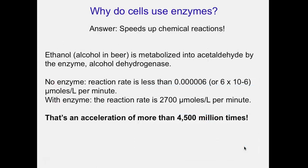Why do cells use enzymes? To speed up chemical reactions. For example, ethanol — the alcohol in beer and wine — is metabolized into acetaldehyde by an enzyme called alcohol dehydrogenase. Without that enzyme, the reaction rate is extremely small. With the enzyme, the reaction rate is 2,700 reactions per minute — an acceleration of more than 4,500 million times faster. This is why enzymes are so critical: the cell needs chemical reactions to happen very fast, quickly, immediately.